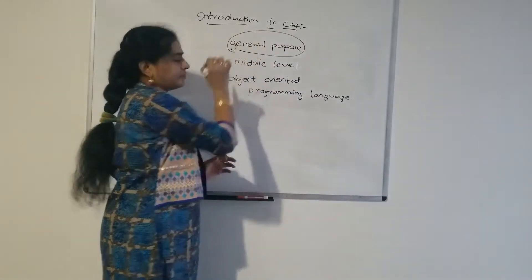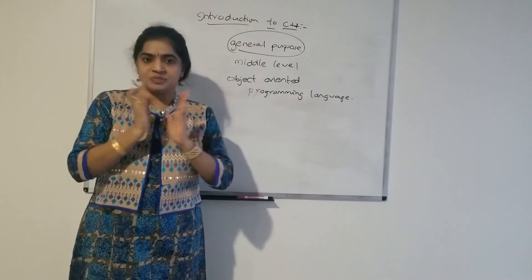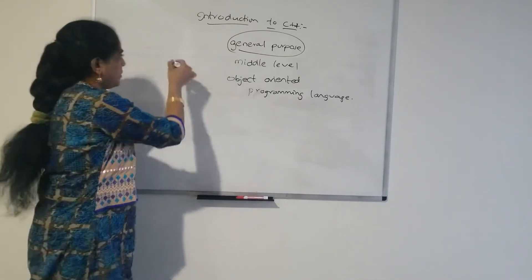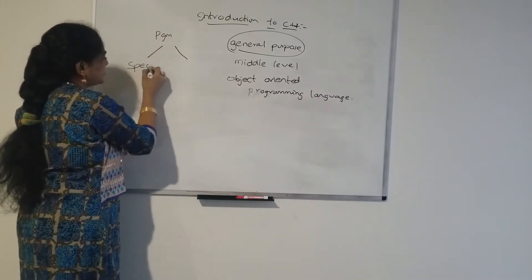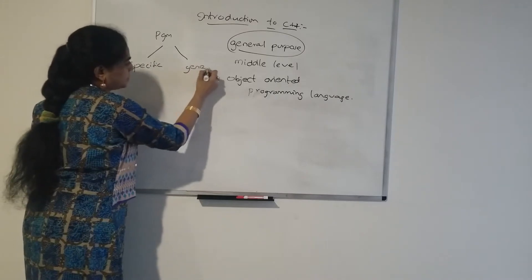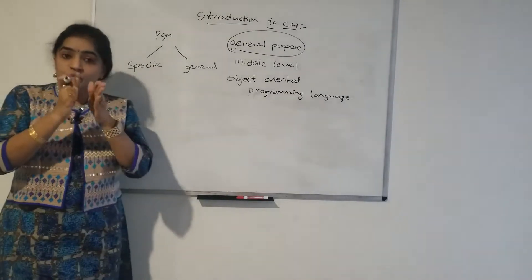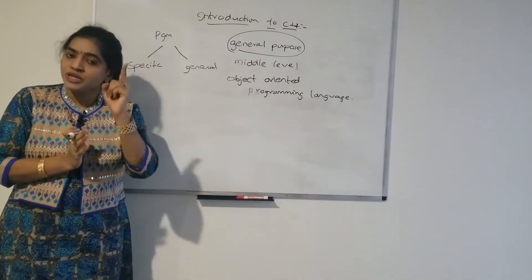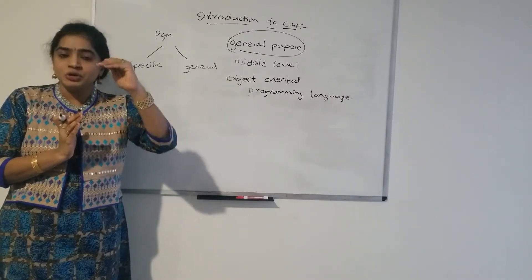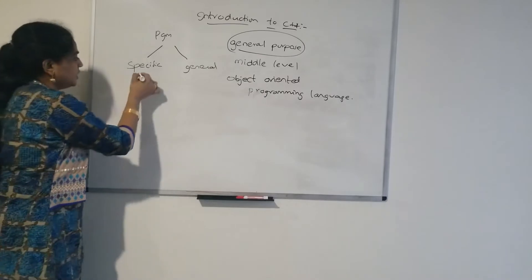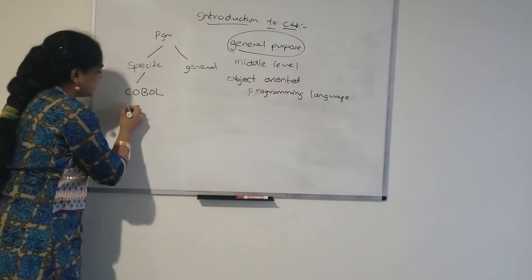What is meant by general purpose? Generally, the programming languages are divided into two types: specific purpose and general purpose. Specific purpose means by using that language, we can develop only a single application — that language is confined to a specific application. For example, if you consider COBOL or Fortran.